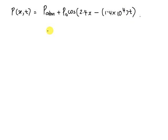Hi, we are given pressure as a function of position and time as P(x,t) = P_atm plus P_0 cos(2.4x - 1.4×10^4 t). The general equation is P = P_atm plus P_0 cos(kx - ωt).